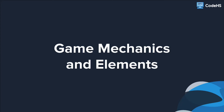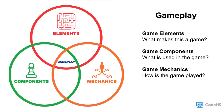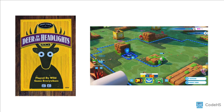Hi! Let's learn more about gameplay as you explore game mechanics and elements. Previously we looked at the overall gameplay experience and a game's components, the objects or pieces that are used in a game. Now let's take a deeper look at the other two parts of gameplay. To explore game mechanics and elements, let's again break down this tabletop game, Deer in the Headlights. We'll also compare what we've learned to the video game Mario plus Rabbids Kingdom Battle.